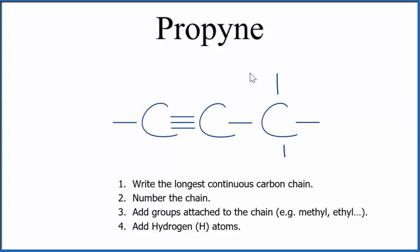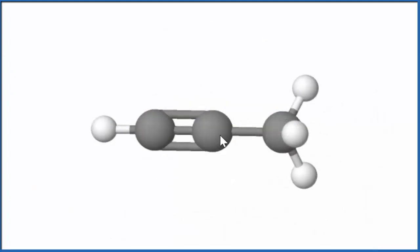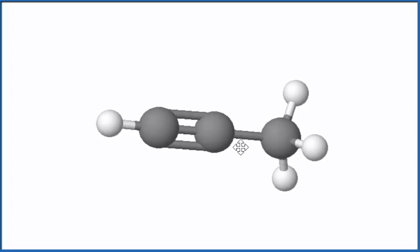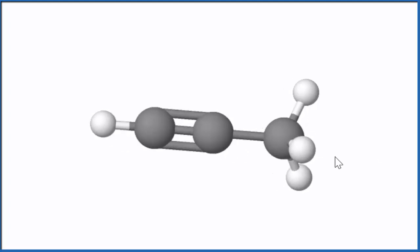We looked at this in three dimensions. This is what it would look like. So the blacks are carbon, the whites are hydrogens, and it's a linear molecule. Everything's in a straight line here for the carbons, that central carbon chain. And you can see we have the triple bond here.